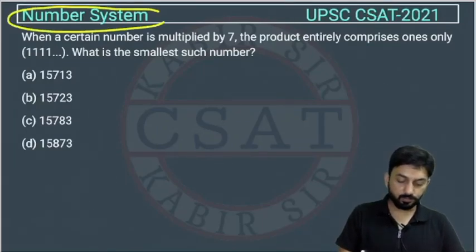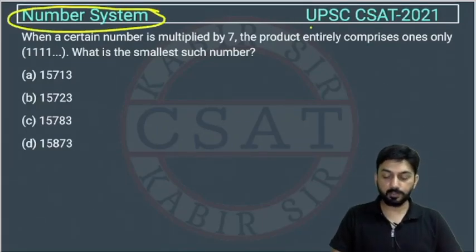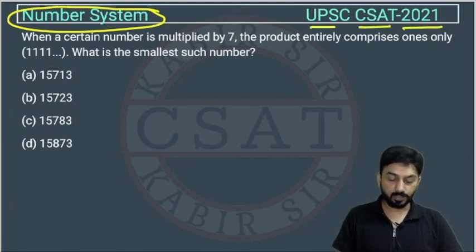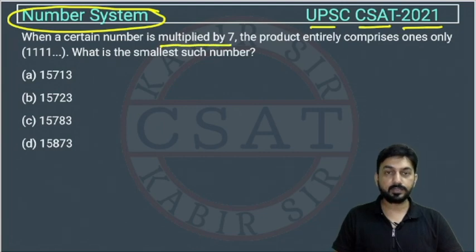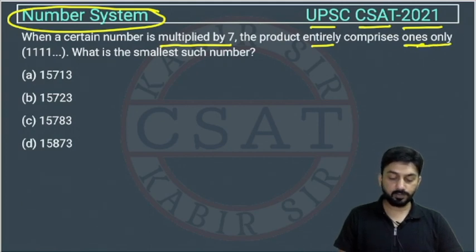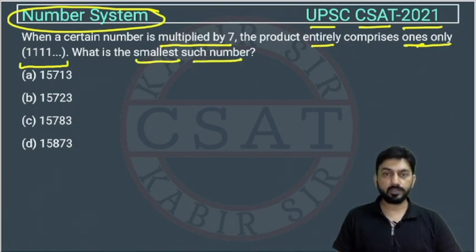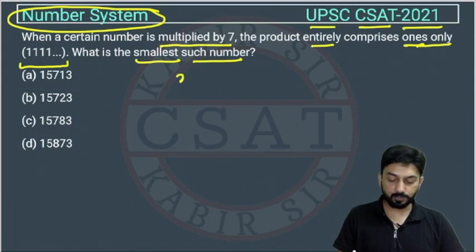This is a question from chapter number system asked by UPSC in CSAT exam of 2021. When a certain number is multiplied by 7, the product entirely comprises ones only. What is the smallest such number? So we have to find the smallest such number. Suppose there is some number x when it is being multiplied with 7, so we are getting ones in this format.